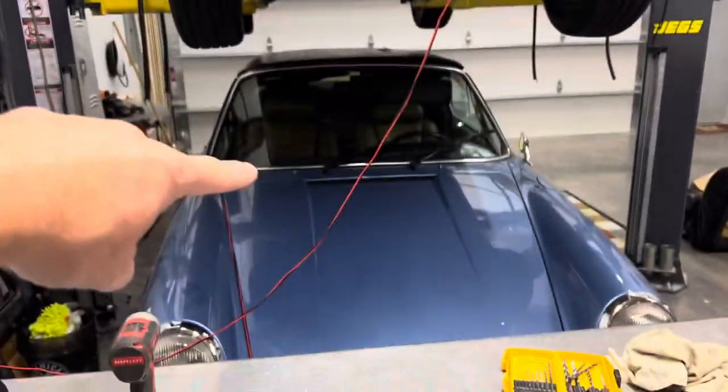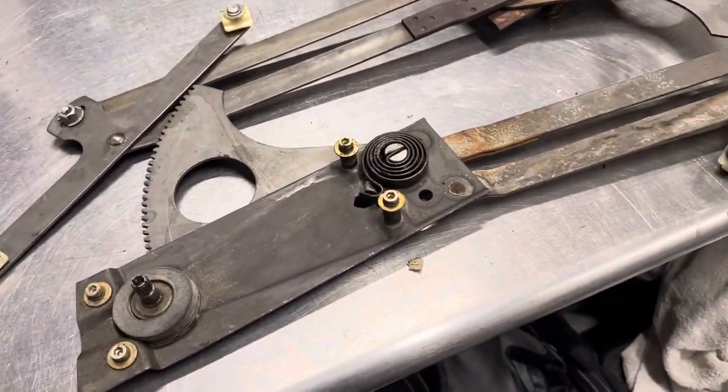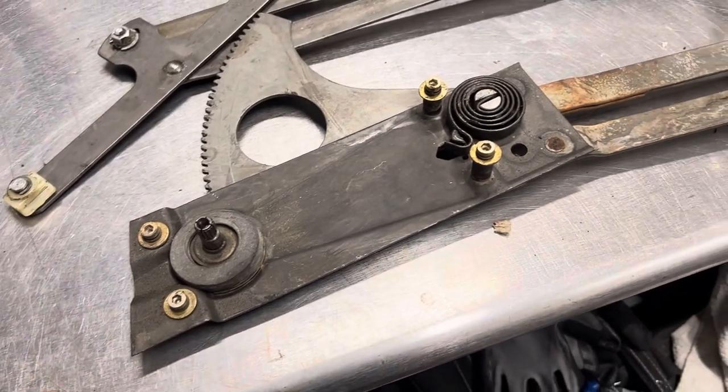Hey, Dave Matthews here, and I have a couple 911s. I have a '74 and a '73, and inside of those there are window regulators, and in this case, they're manual operated window regulators.